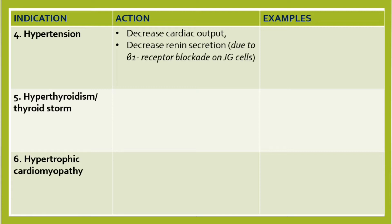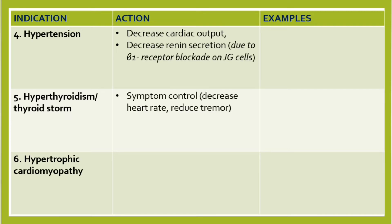Angiotensin II has a plethora of effects in different organs, with the main aim of increasing blood pressure. So if we block renin secretion, we decrease blood pressure — that's the mechanism in hypertension. The fifth indication is hyperthyroidism or thyroid storm, where we use beta blockers for symptom control to decrease heart rate and reduce tremors.